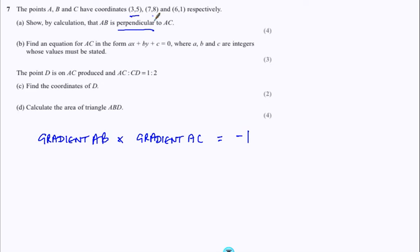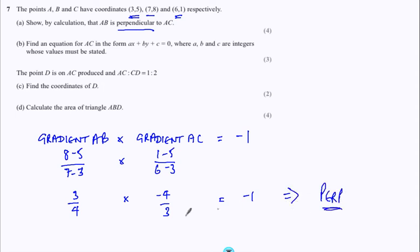So let's do those gradients. A to B, A to C, difference in the Ys divided by difference in the Xs. Multiplied by A to C now, one minus five, six minus three. What have we got? Three over four, minus four over three, minus one, implies we've got perpendicular lines. Gradients multiply to give minus one. Okay, so that's the first bit.